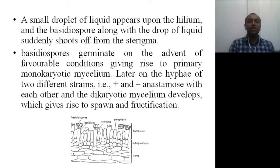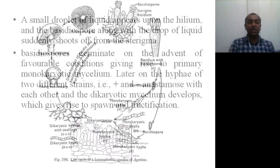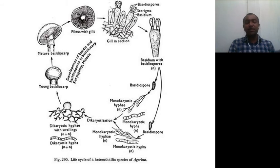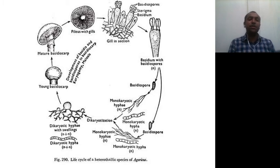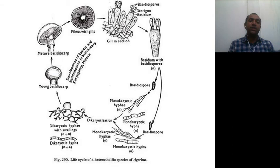The hyphae of the two strains — plus and minus — fuse with each other and a dikaryotic mycelium develops, which gives rise to spawn and fructification. Looking at the overall life cycle of Agaricus: the mature basidiocarp has an annulus, stipe, and pileus — this umbrella-like structure. On the ventral surface of the pileus you get the gills or lamellae.